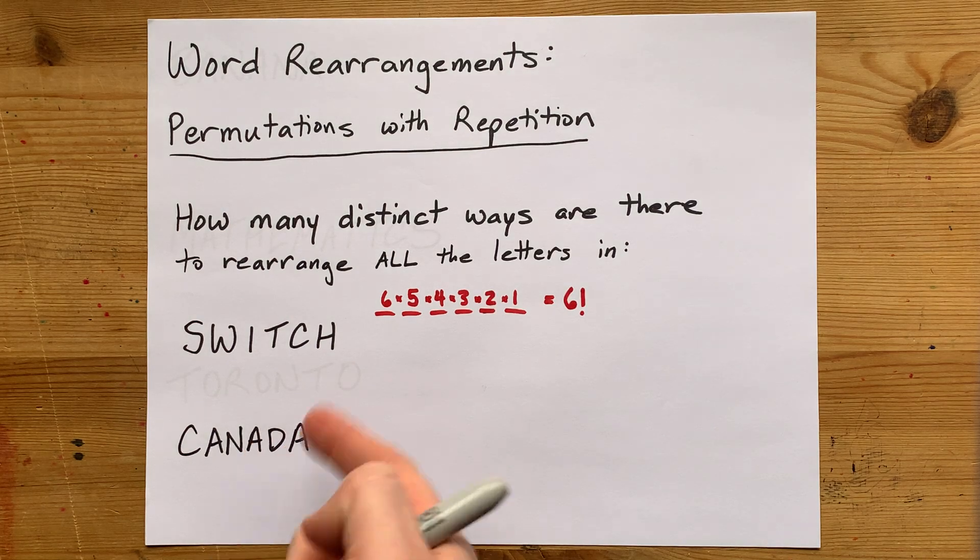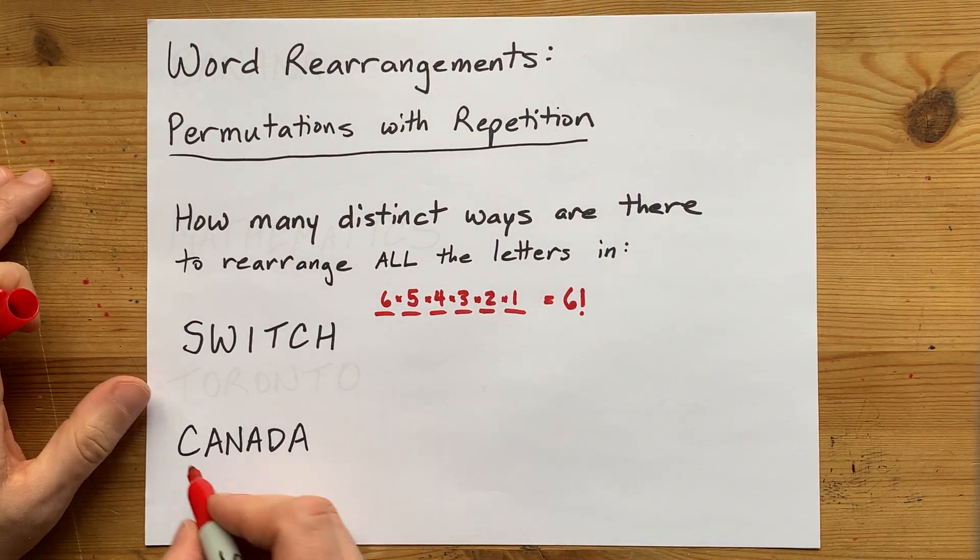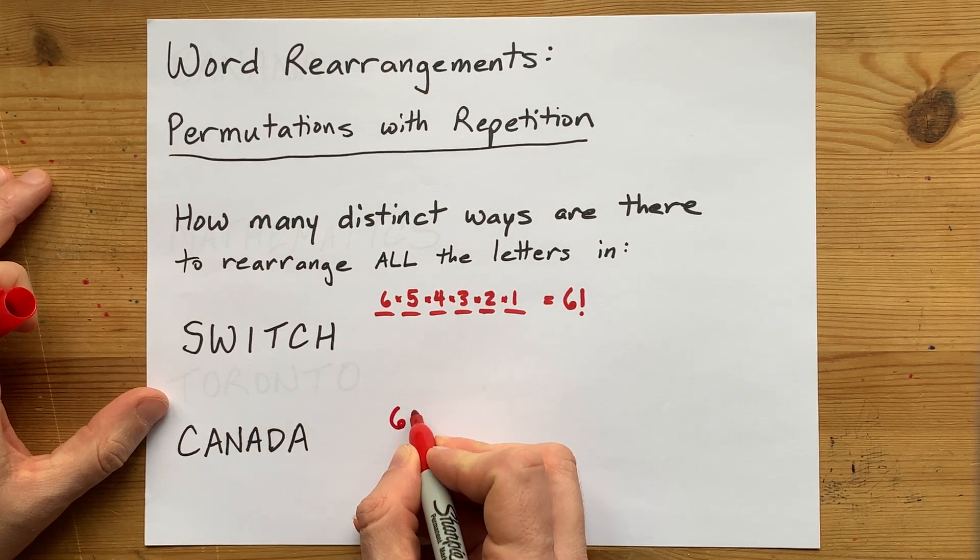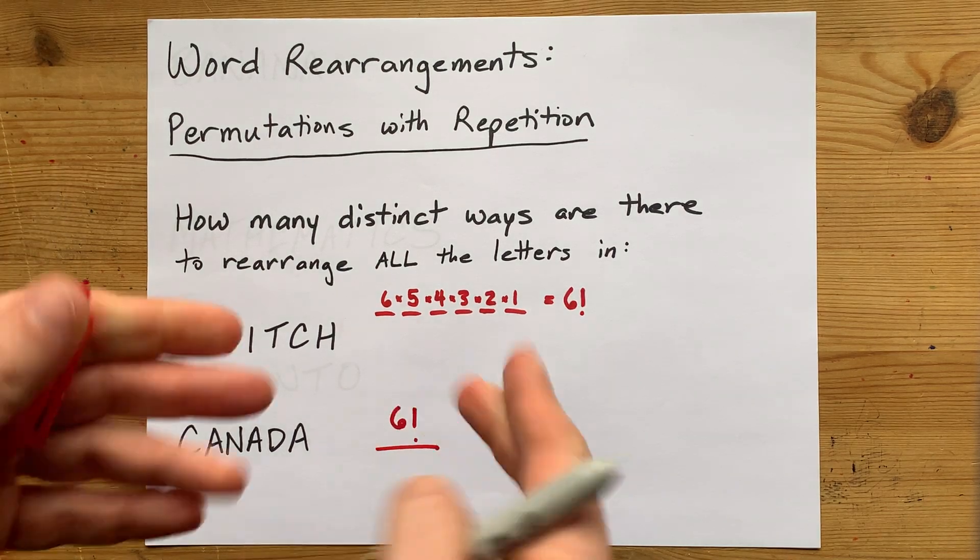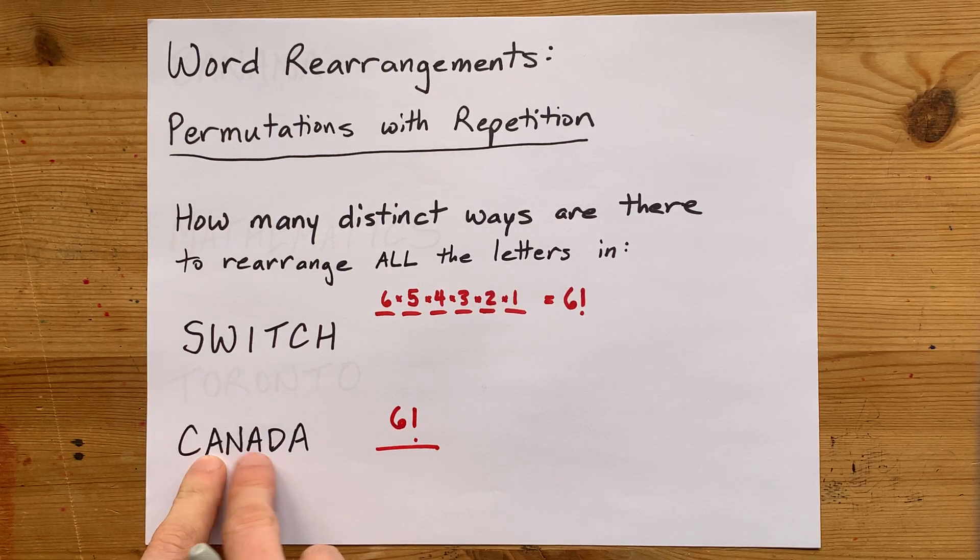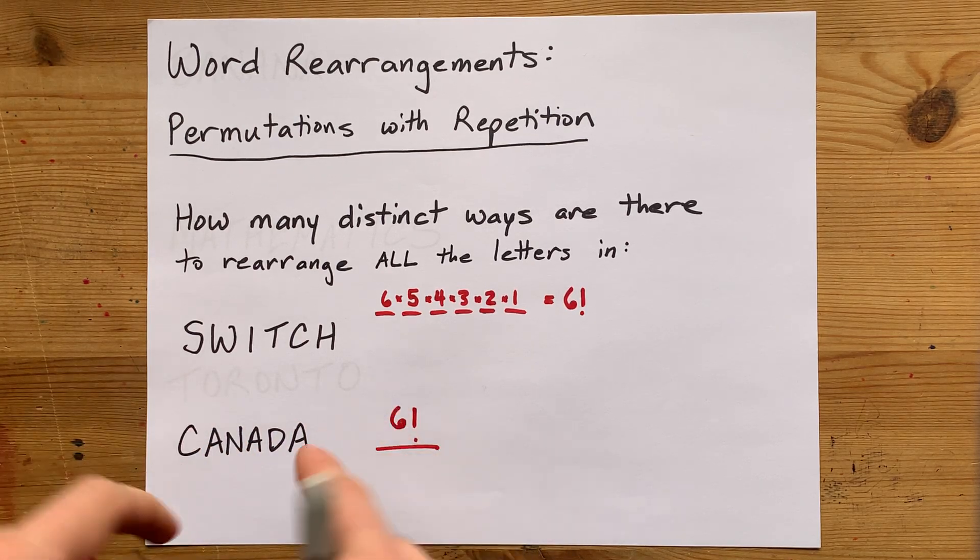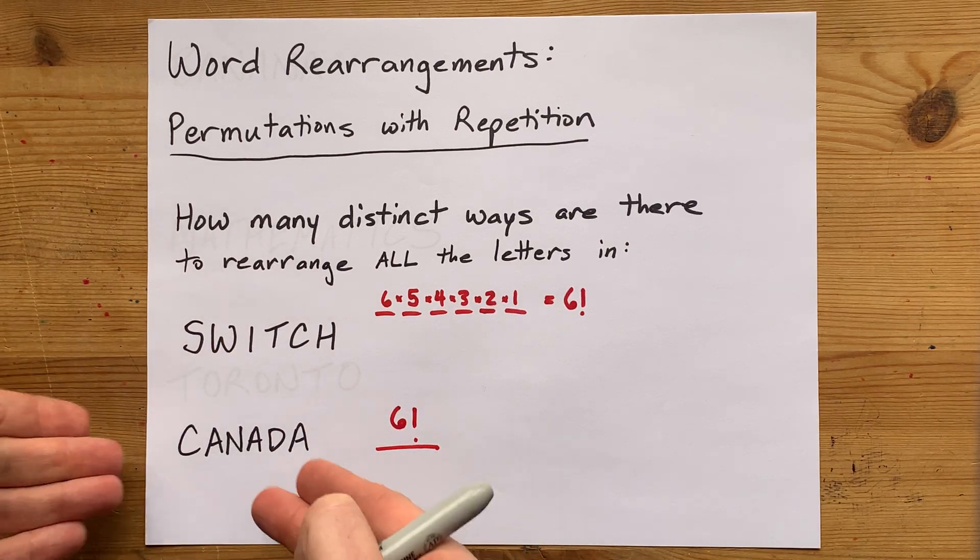Once you have duplicate or triplicate letters, things change a little bit. There are still six letters here that we have to rearrange, but we have double and triple counted some of the combinations, because these three A's are equivalent. If I switched that A with that A, you wouldn't know the difference. It's the same word.